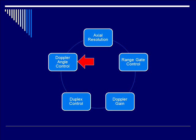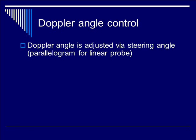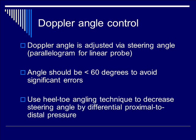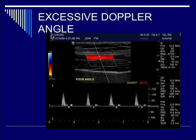Finally, let's talk about Doppler angle control. In the context of Doppler measurement for a vessel, you want to adjust the steering angle via manipulation of the parallelogram. The angle should be made to be less than 60 degrees to avoid significant errors. By using the heel-toe angling technique, you decrease the steering angle by differential proximal to distal pressure. What do we mean by excessive Doppler angle? In this brachial artery example, the angle is 72 degrees — it's a poor angle, gives you spectral fill-in, and results in very inaccurate velocity measurements.